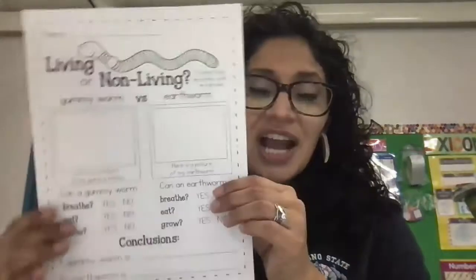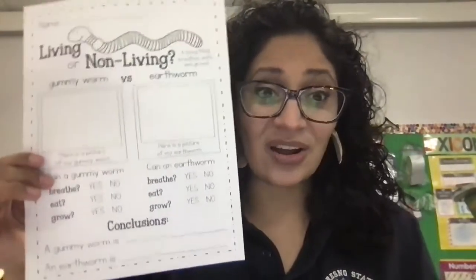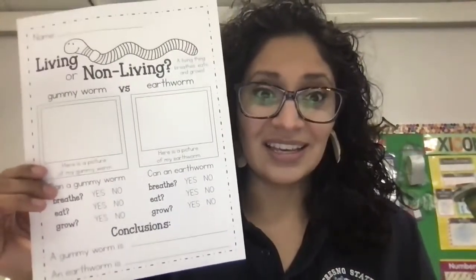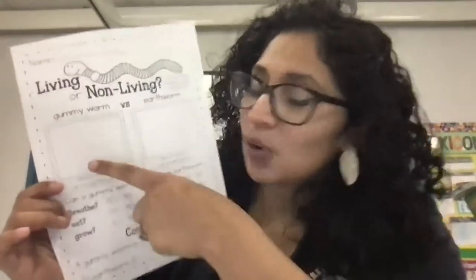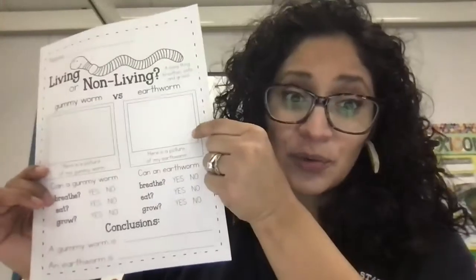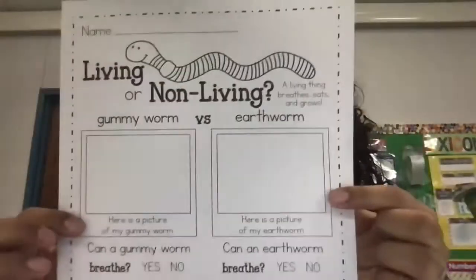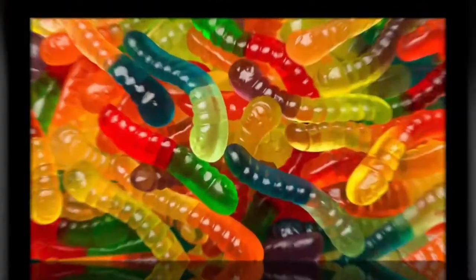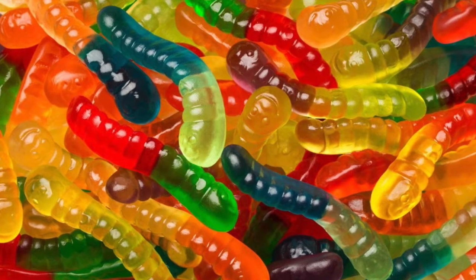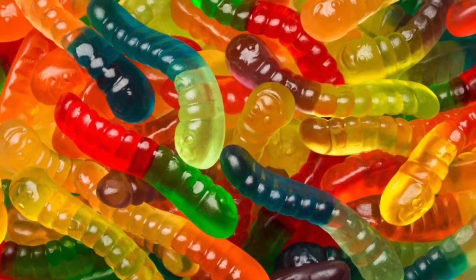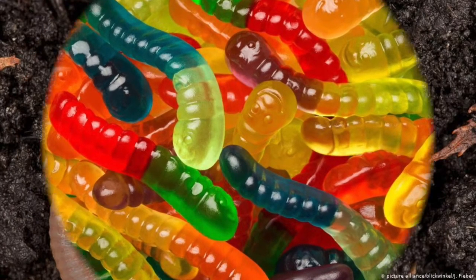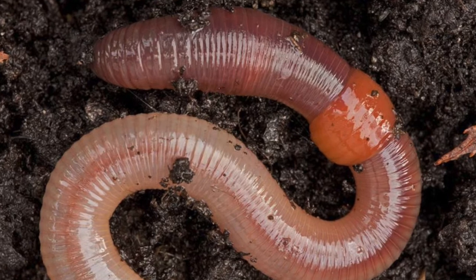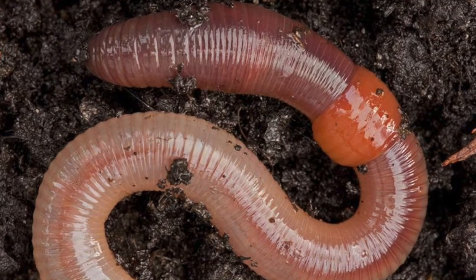So in Schoology, I have this page and it says living or non-living. What I'd like for you to do is draw a gummy worm right here, and then an earthworm right here. You see that? So here is a gummy worm — delicious snack, looks yummy. And here is an earthworm. Oh, look at that.